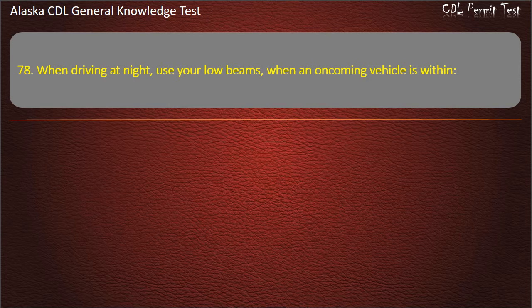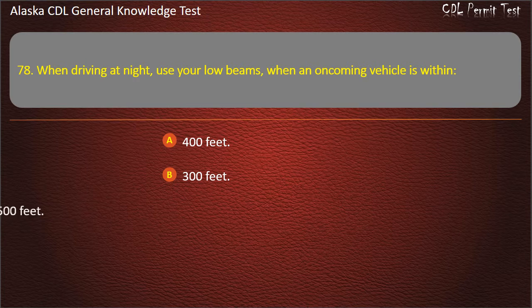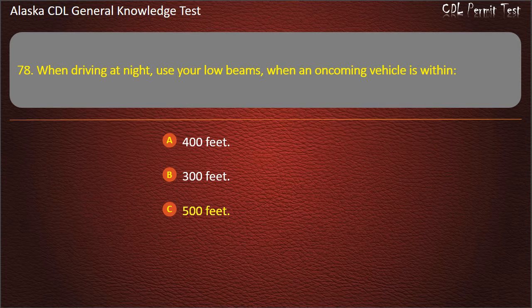Question 78. When driving at night, use your low beams when an oncoming vehicle is within 400 feet, 300 feet, or 500 feet. Answer: 500 feet.